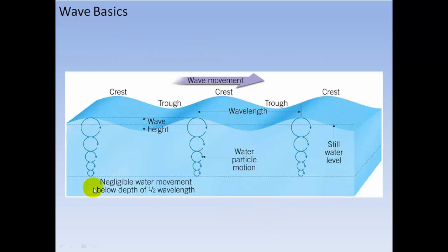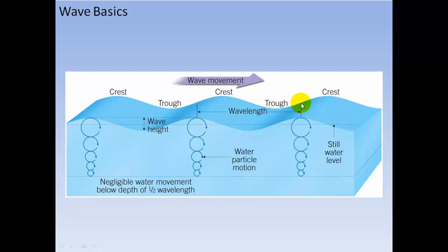Here we have the direction of wave movement. The wave height is the difference between the bottom of the trough and the top of the crest. Wavelength is measured from crest to crest. Wave period, or frequency, is the time it takes for one whole waveform to pass a point.